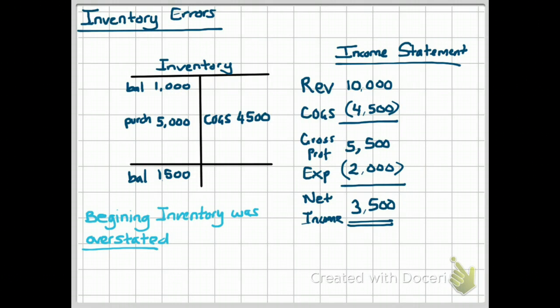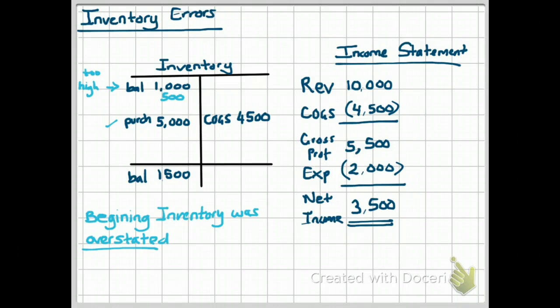Remember, overstated means too high, so the balance of $1,000 in beginning inventory would have been too high. The correct amount should have been $500. So your beginning inventory was overstated. We assume that our purchases and our ending inventory are correct. That means your cost of goods sold is also too high — it should be $4,000.